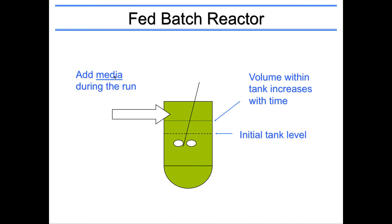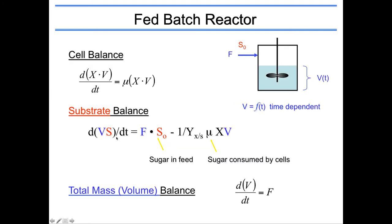So fed batch reactor, not that sophisticated. We still have our box, but now we have an input. That input is added during the actual run itself. That means the volume of the tank is going to increase. And so you need to know the time dependent volume increase, as well as the concentration of what you're putting into the nutrient feeds. The cell balance here is pretty simple. Again, I mean, there's no cells in your feed stream, so it doesn't affect it, right? You just have an accumulation term and you have a growth term. So it's the same as it was in the batch.